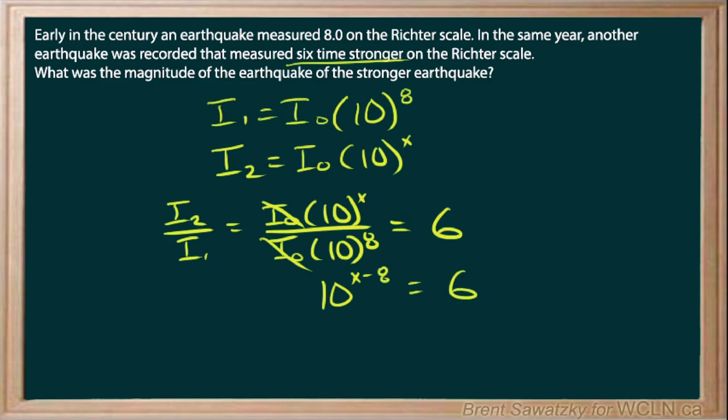And we resort to our log rules now. And so what we can do is we can bring down that exponent. So (x - 8) log 10 equals... And we add log to both sides. So log six.